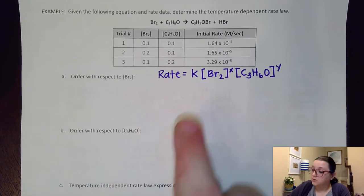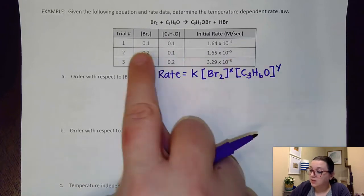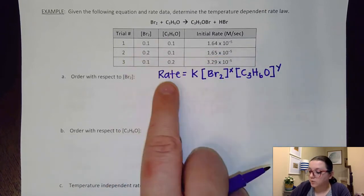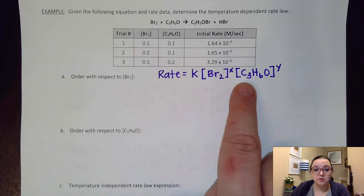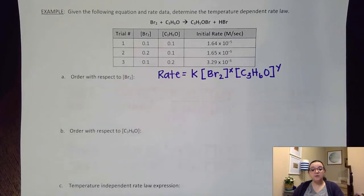And so again, what we want to do is solve for k, x, and y by plugging in this data here for rate and our two concentrations. And so in order to solve the respect to one of these reactants, I'm going to need to pick two trials where some of my unknown variables remain consistent. So that way, when I set a ratio of one trial over another, at least some of the variables will cancel out.